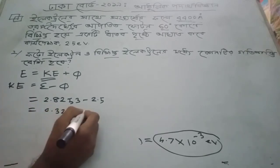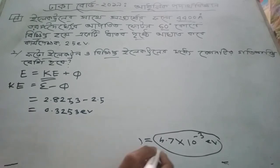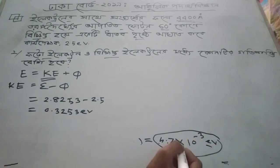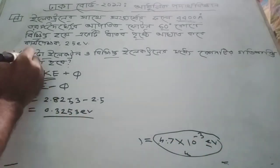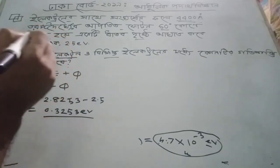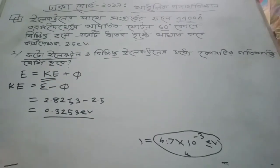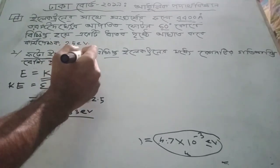0.3253 electron volts. 4.7 into 10 to the power negative 3 electron volts. The value is 9.3. Stefan photo-electron: who can compute the component of the component.